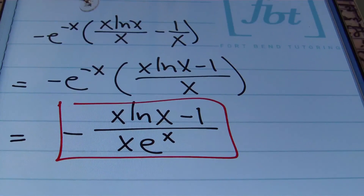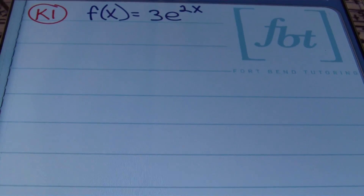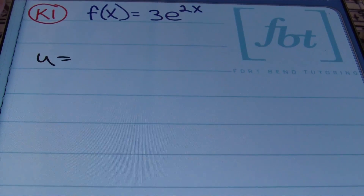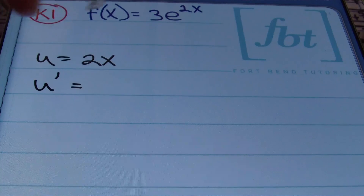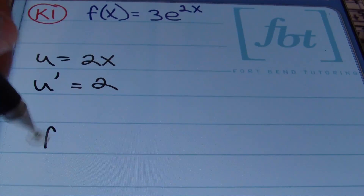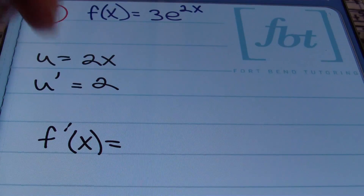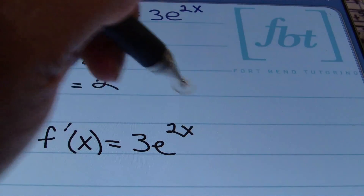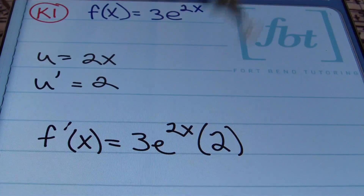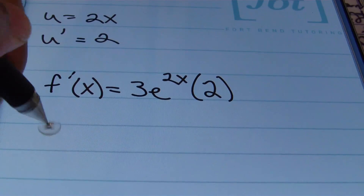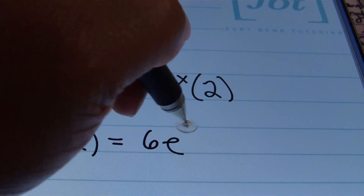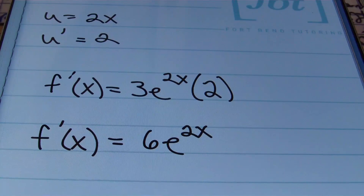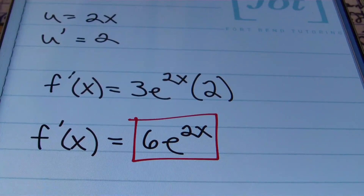Now a problem worked out by our mascot Kappa the math monkey. In problem K1 we have f of x equals 3e to the 2x. Identify u equals 2x and u prime equals 2. The first derivative is f prime of x equals 3e to the 2x times 2, which simplifies to 6e to the 2x. Red boxing it.